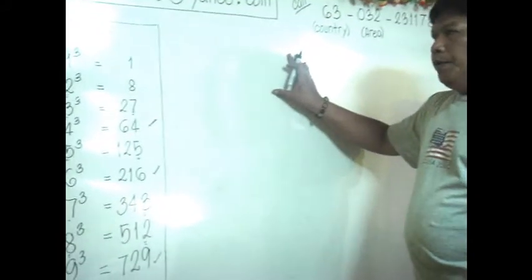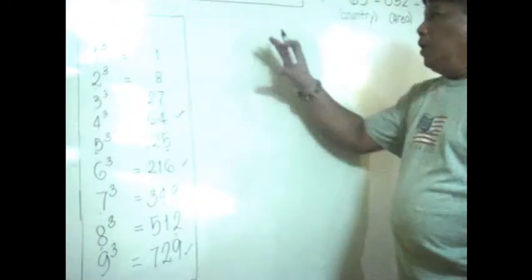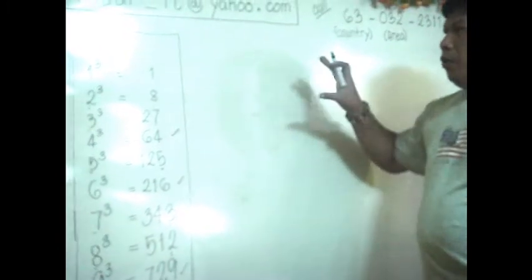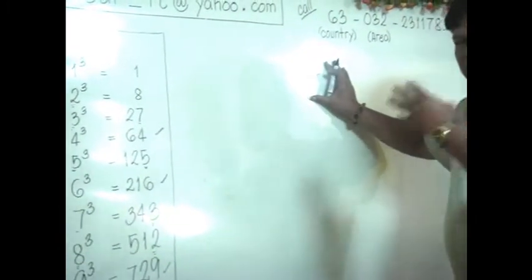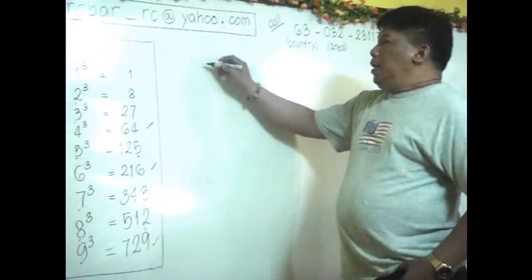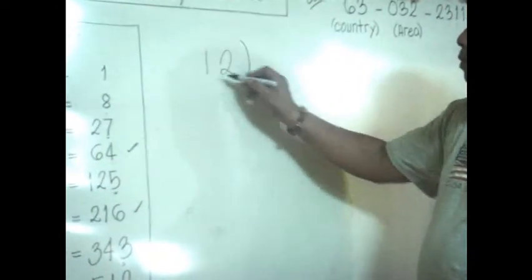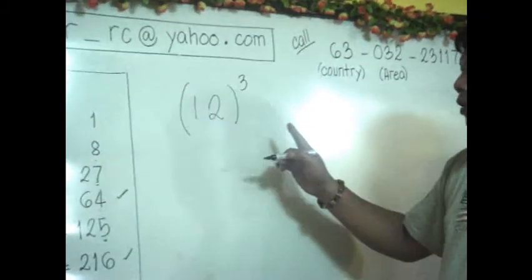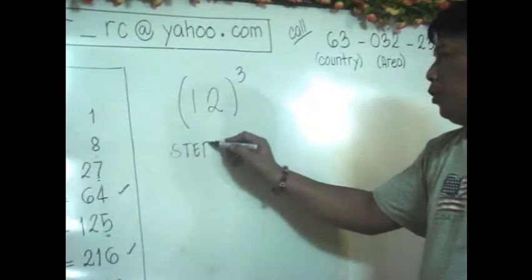It is very hard to cube a number without applying techniques that let us solve it quickly — in just one line, or even mentally. Take the example of 12. To find the cube of 12, we follow four steps.